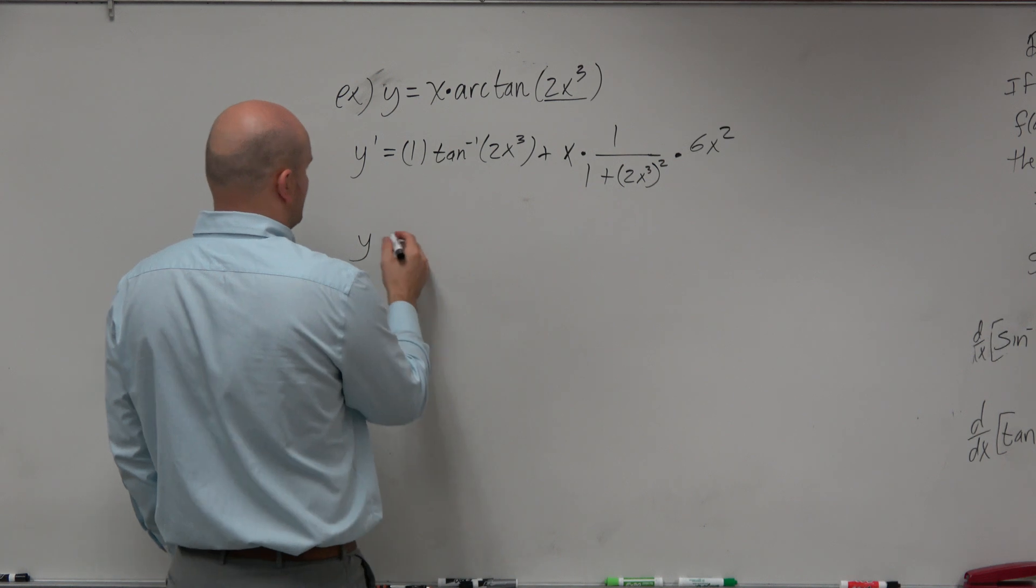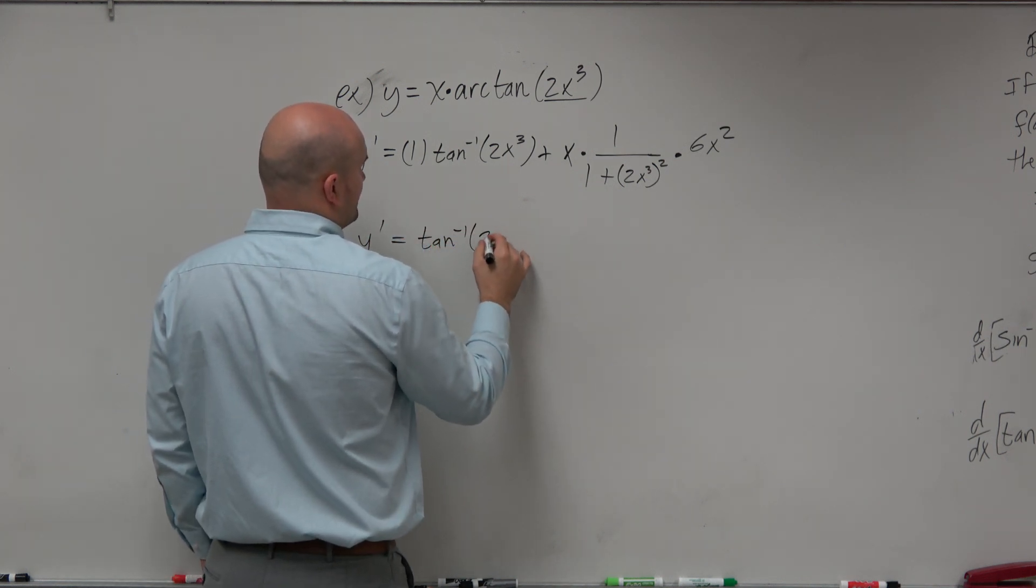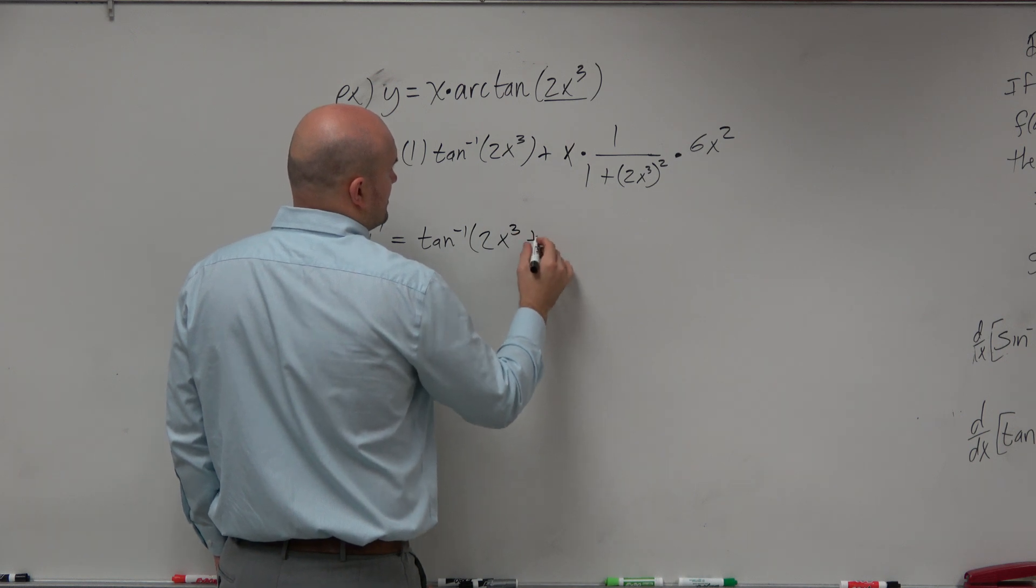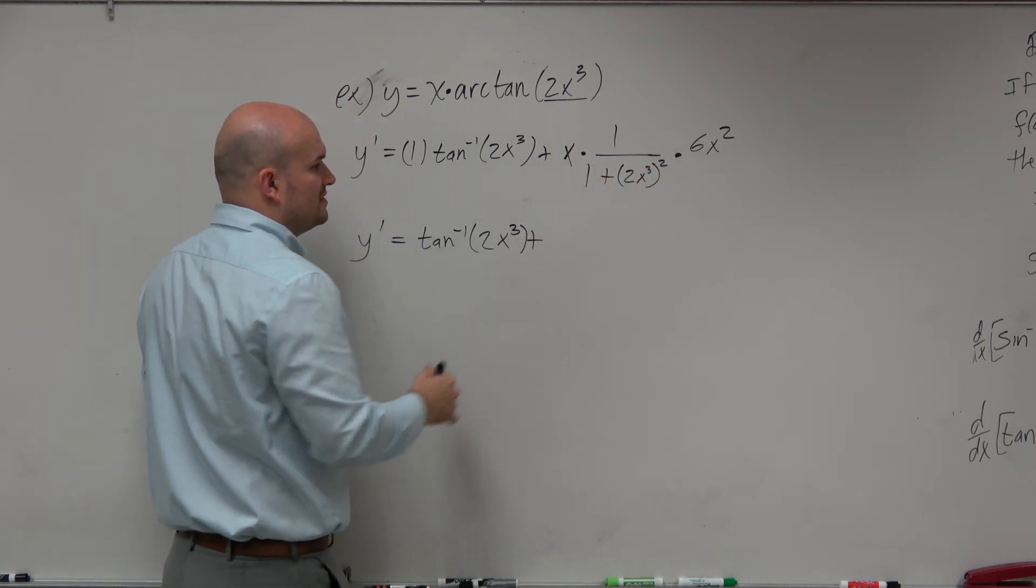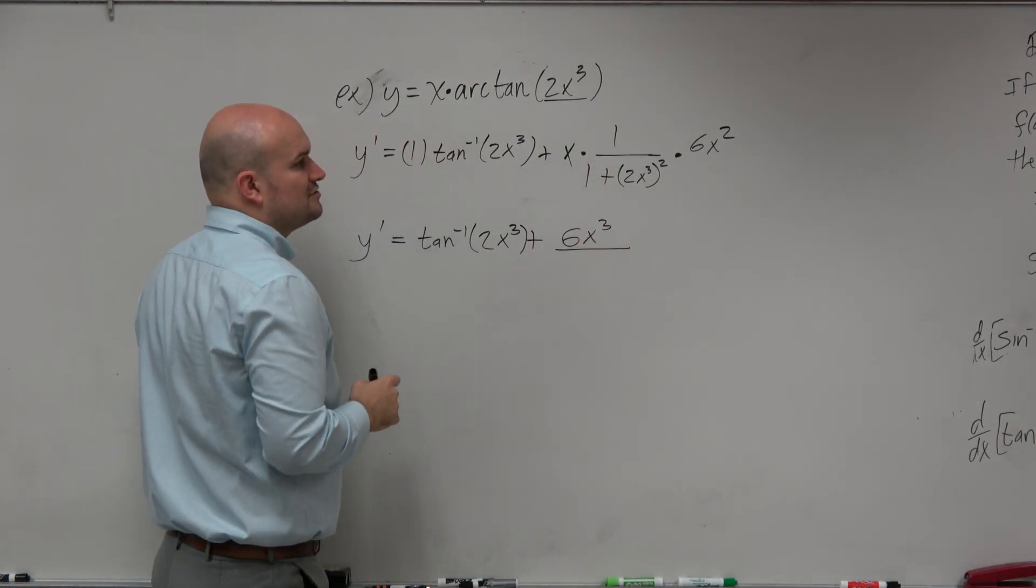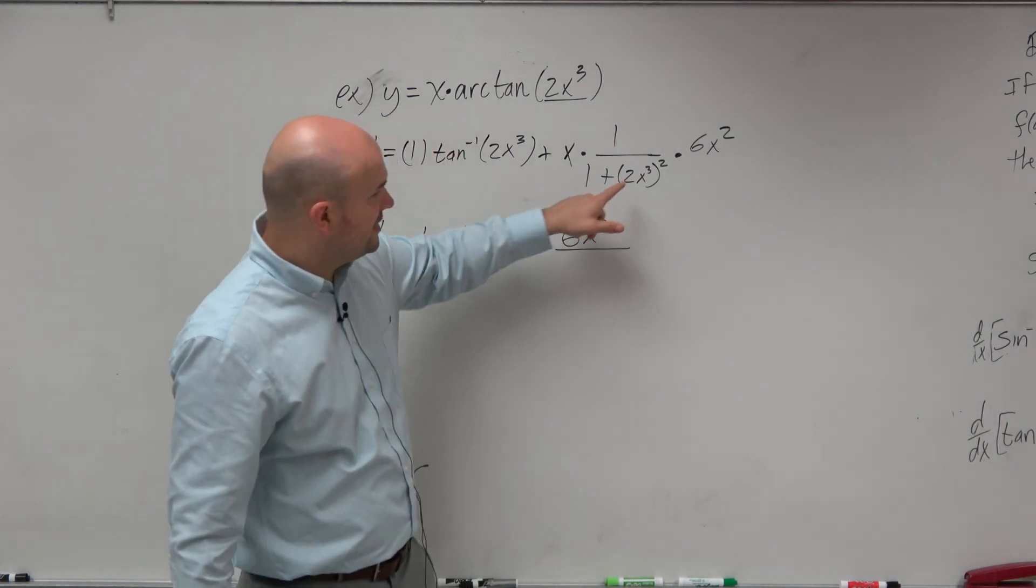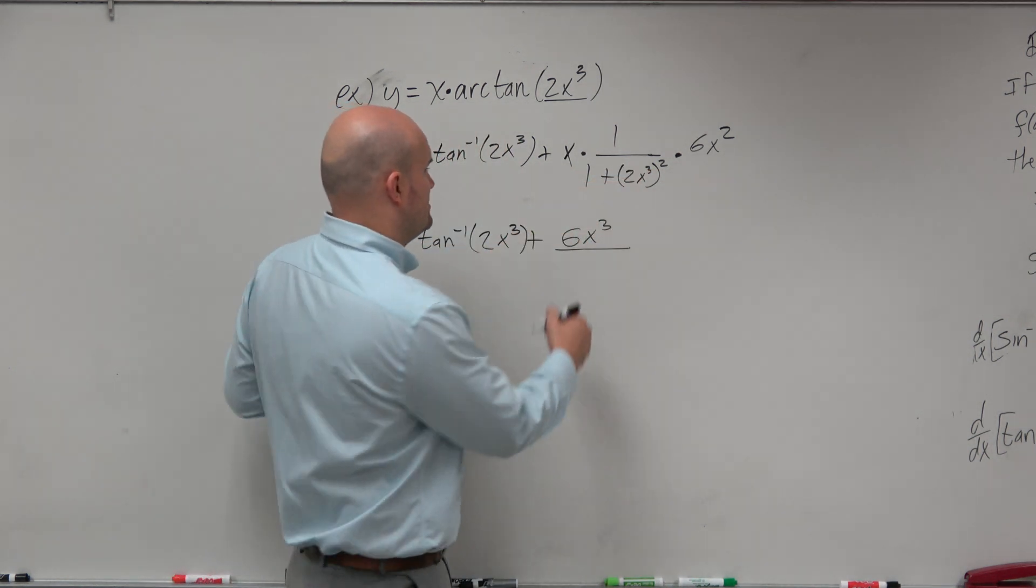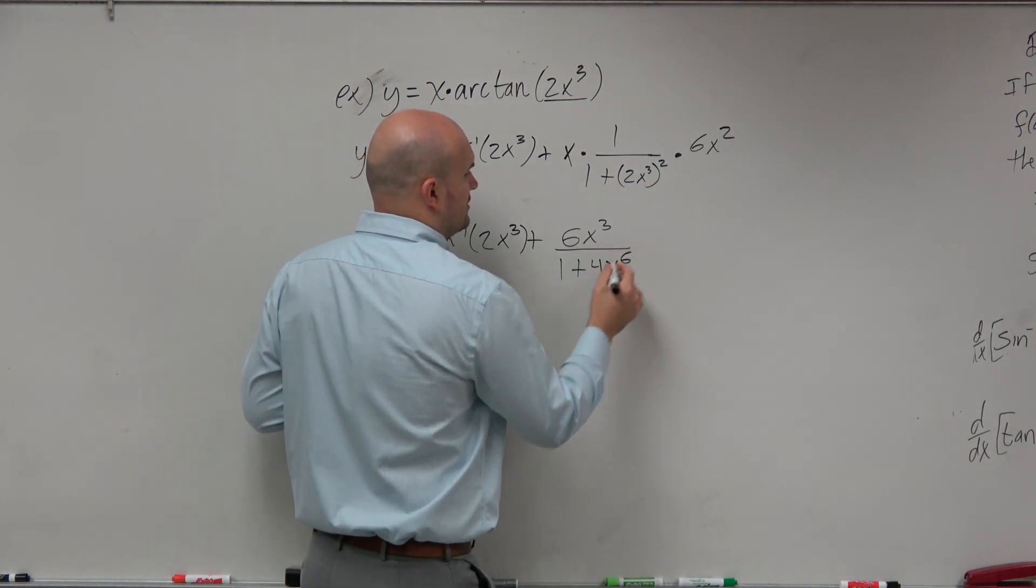Then I can just kind of simplify this a little bit. Tan inverse of 2x³ plus I can multiply that straight through, so that's going to be a 6x³ on the top. And then we can simplify that. Just remember when you have 2x³ squared, you've got to make sure you square the 2 and raise and multiply the powers. So that's going to be 1 plus 4x to the 6th power.